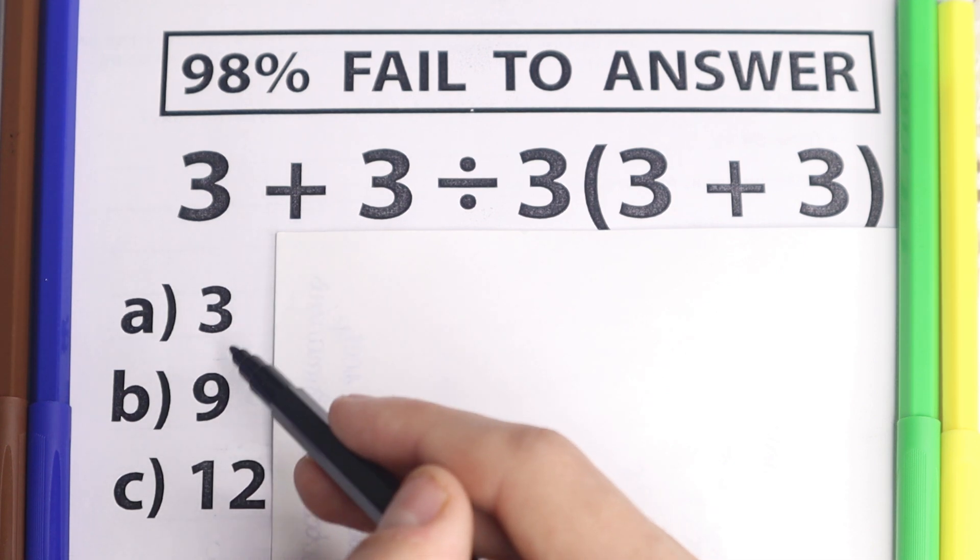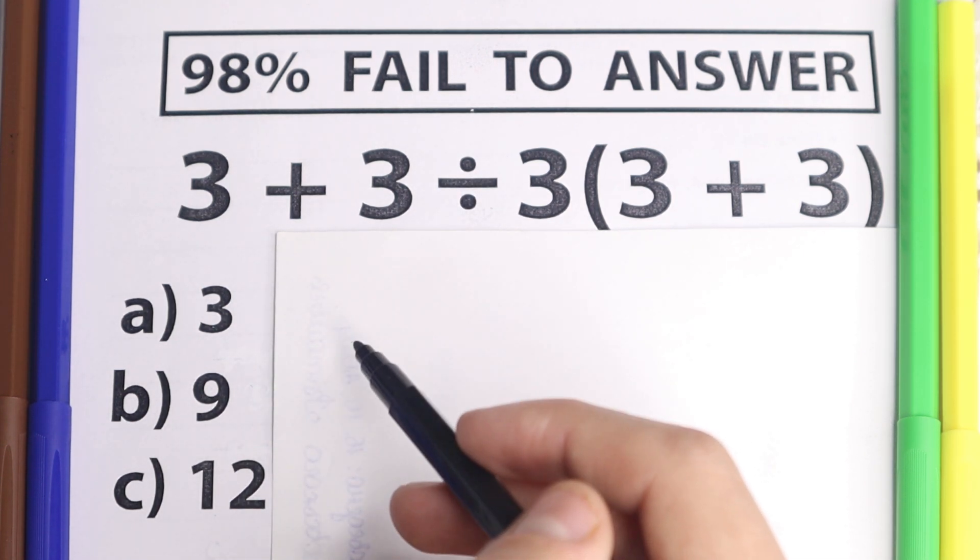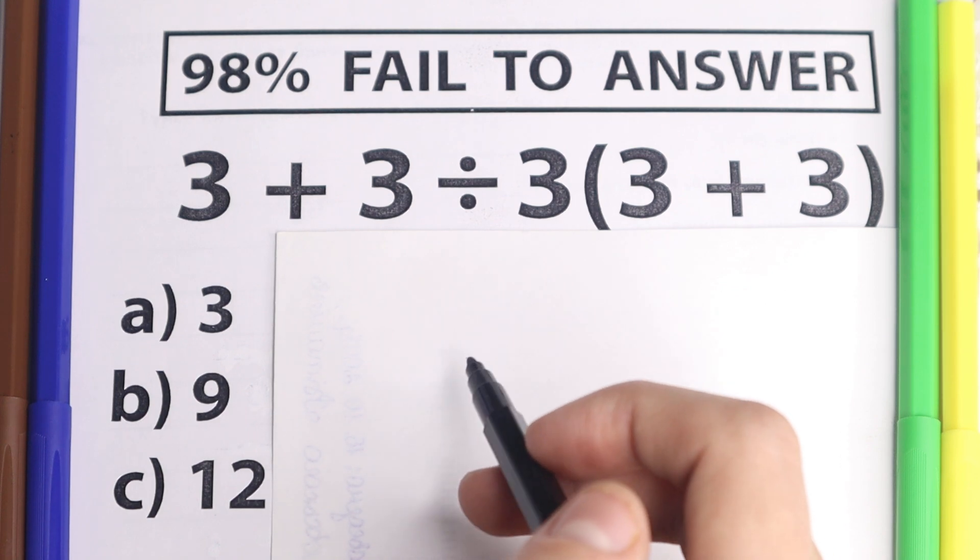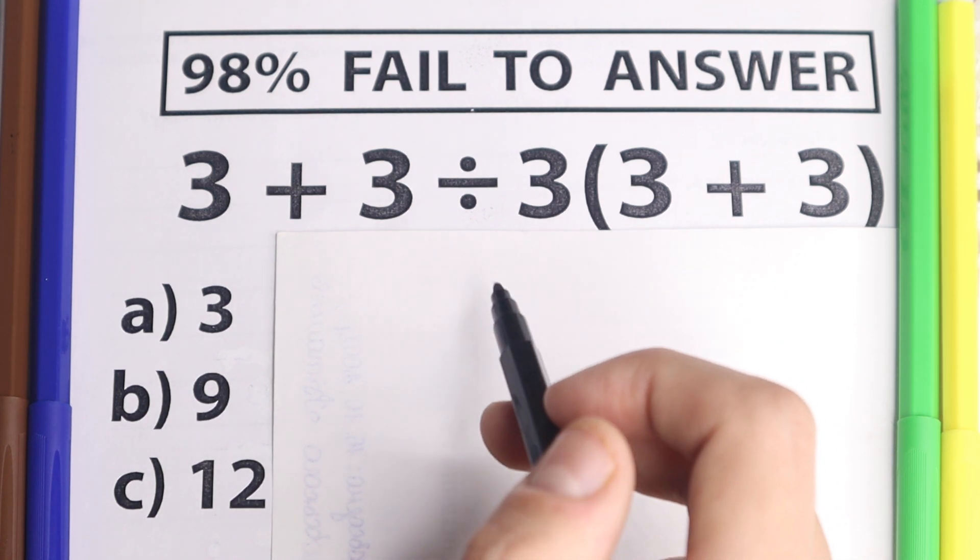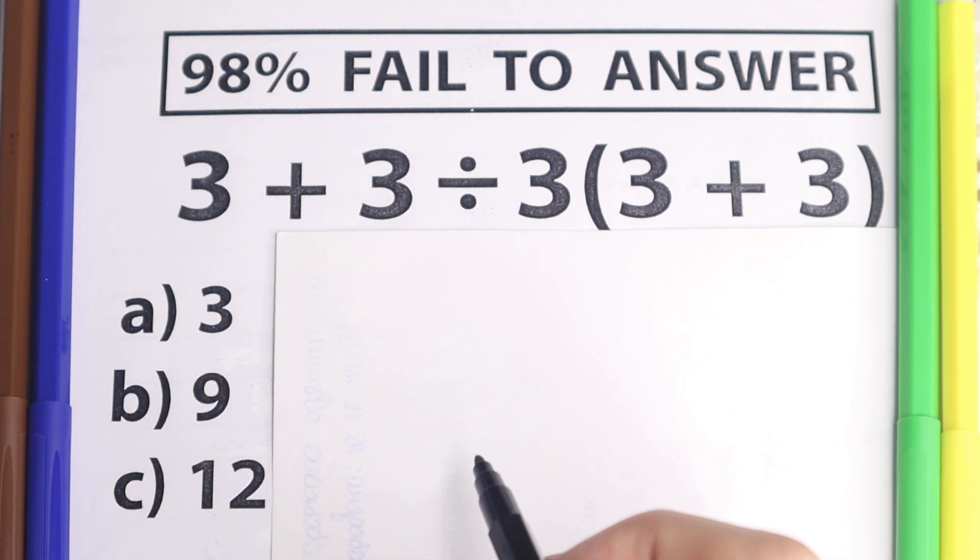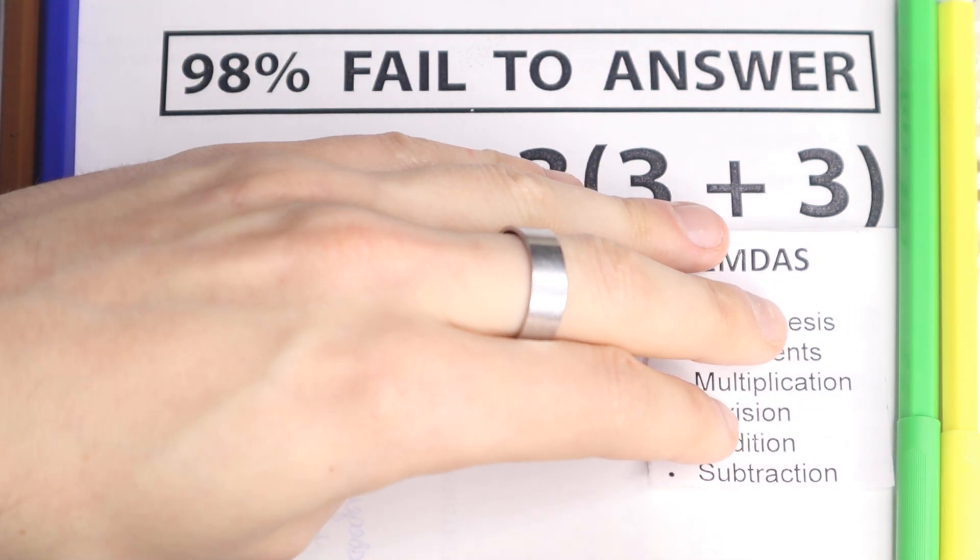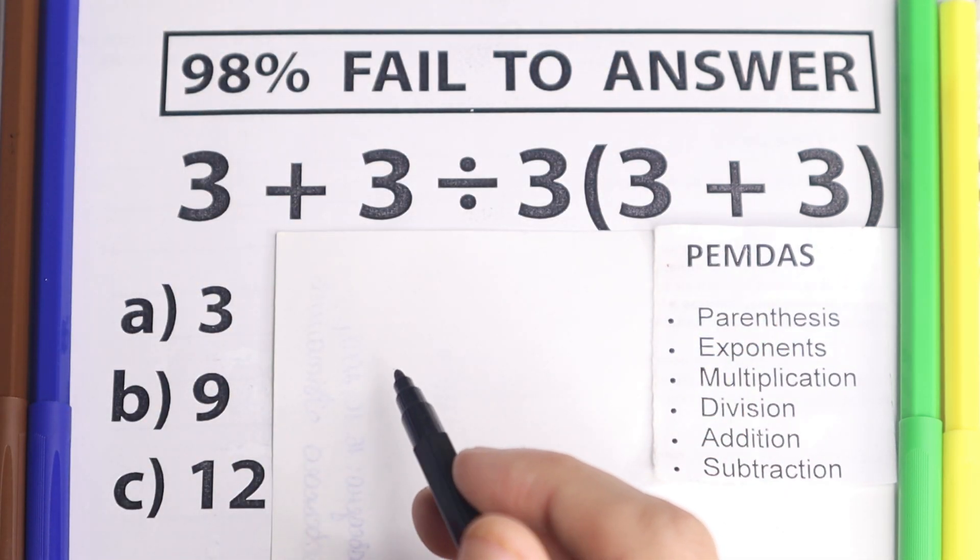We start with division, different answer, then we start with division, completely different answer. So obviously we need to understand what is the correct order to do this problem. And for this question I have this PEMDAS order of operation, this is the main popular order of operation in the world.